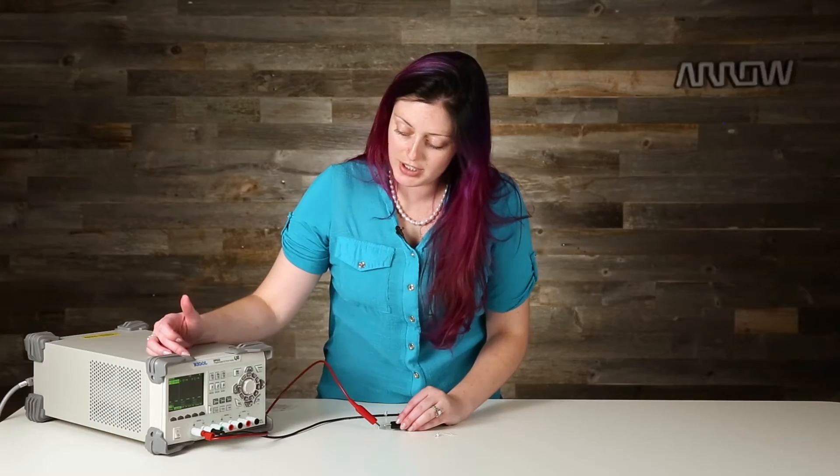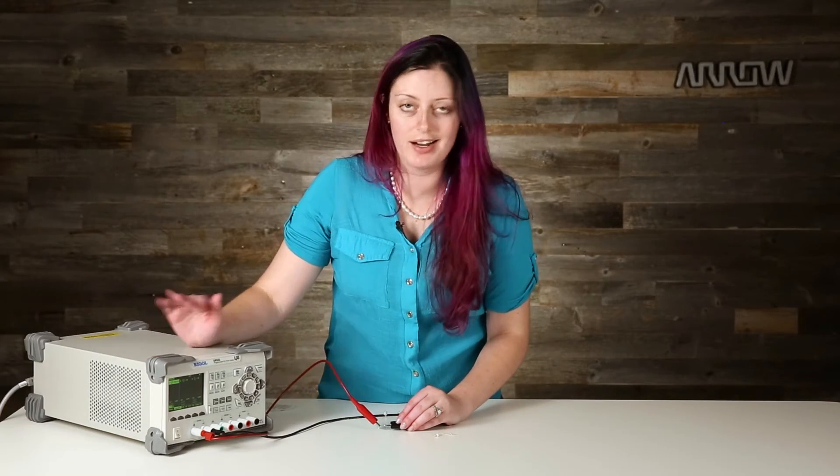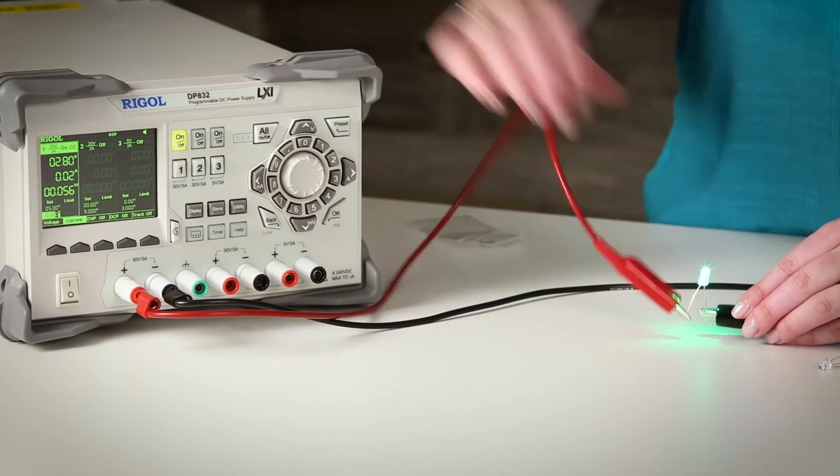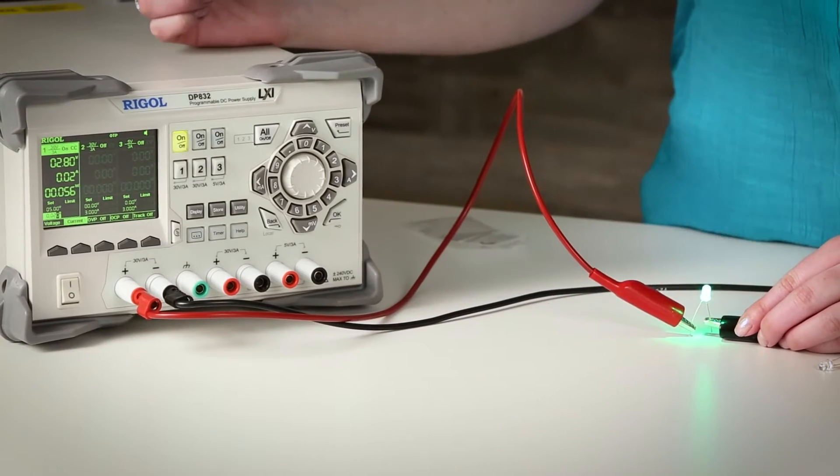So if I limit the current to 20 milliamps, which I've done here, I can leave it at 5 volts. And you'll see that when I turn that on, the top is always the brightest part of the LED. Don't look directly into that.